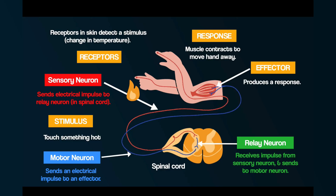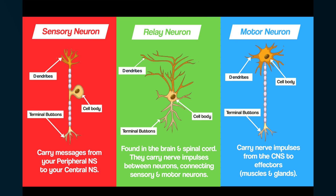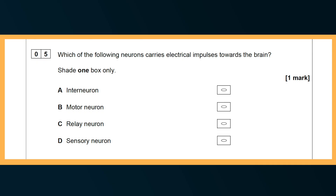This question is testing your understanding of the different types of neuron. If you've watched the video on neurons and the nervous system, you may remember this diagram. Motor neurons carry information from the central nervous system to the peripheral nervous system — the opposite of the question — so we can cross that out. Relay neurons carry information between sensory neurons and motor neurons. Inter-neurons are another name for relay neurons, so we can cross both of those out, which leaves sensory neurons. Sensory neurons carry information from your peripheral nervous system to your central nervous system, made up of your brain and spinal cord, which means D is the correct answer.